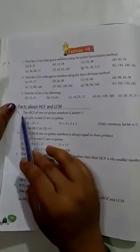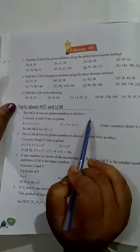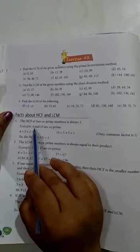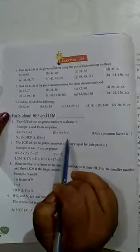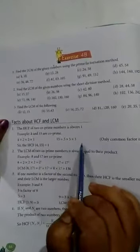First, we will explain the example. The HCF of 2 prime numbers is always 1. The prime numbers are 4 and 15. The common factor is 1. This factor is 2 into 2 into 1, 3 into 5 into 1. What is common in this factor? 1.